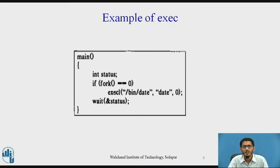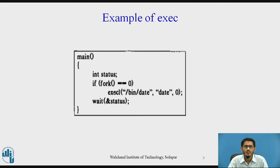By convention, the first parameter of the argument list argv to exec is the last component of the pathname of the executable file, so the process has access to the program name at user level. The kernel then copies the strings '/bin/date' and 'date' to an internal holding area and frees the text, data, and stack regions occupied by the process. The kernel reconstructs the original parameter list and puts it in the stack region. After the exec call, the child process no longer executes the old program but executes the program 'date'. When 'date' completes, the parent process receives its exit status from the wait system call.